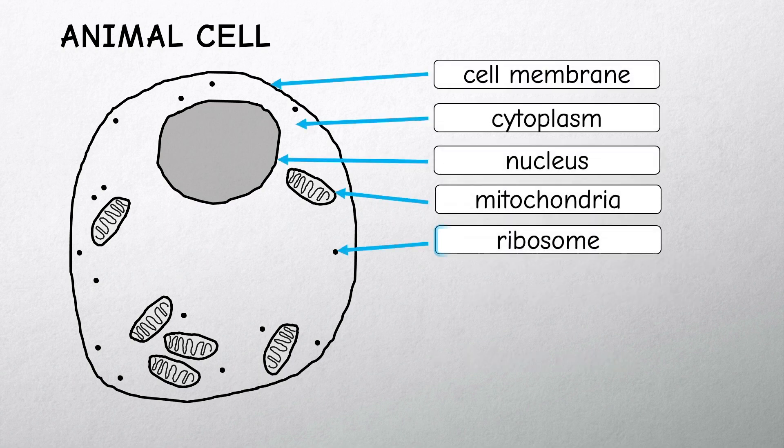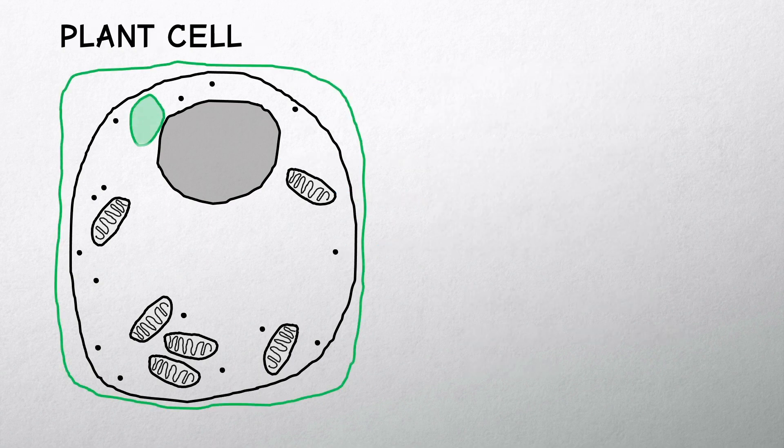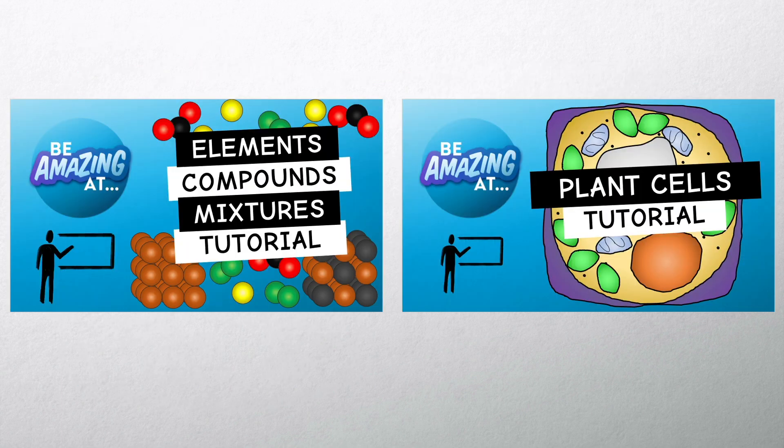Ribosomes carry out protein synthesis. This means they make proteins. Plant cells are very similar to animal cells and there is a link to a video on this in the description below.